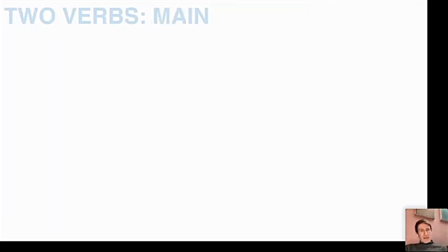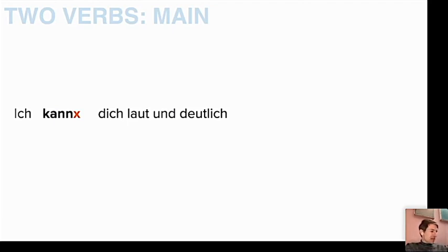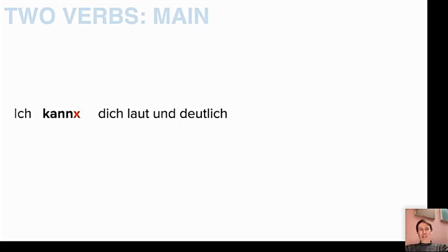Next level: two verbs in main clauses. Clause is just another fancy word for sentence. 'Ich kann dich laut und deutlich.' 'Dich' is 'you,' and 'laut und deutlich' — 'laut' sounds like English 'loud' and means exactly that; 'deutlich' means 'clearly.' So: I can, you, loud and clearly — but what? 'Kann' alone doesn't give me enough information.